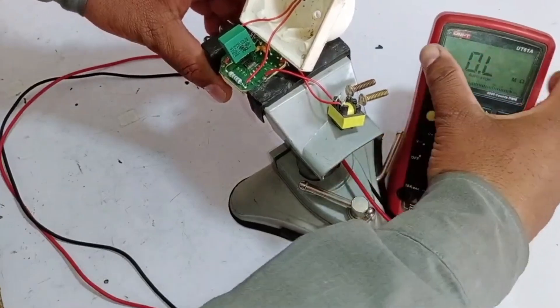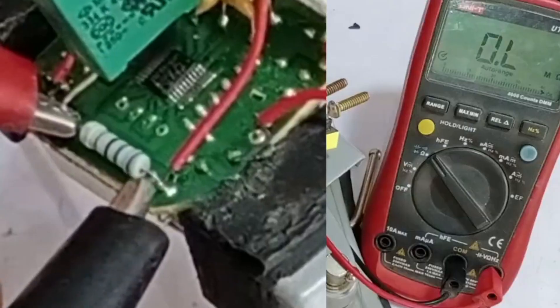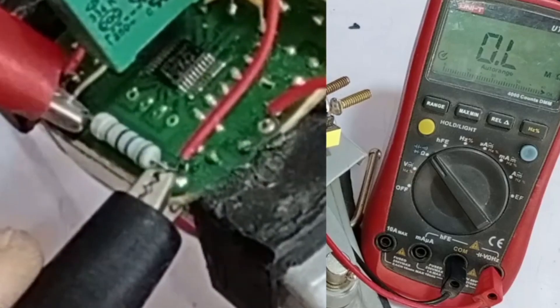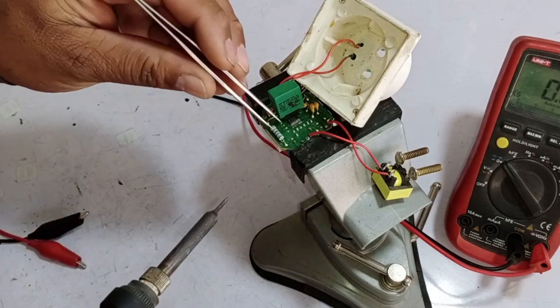I have set the multimeter to ohms mode, and I am checking this protection resistor. As you can see, it is not showing any resistance at the moment, indicating that it is faulty. Now, we will remove this resistor.